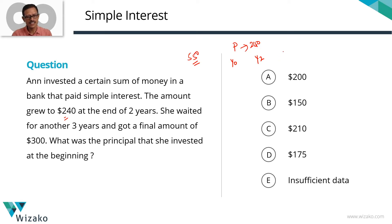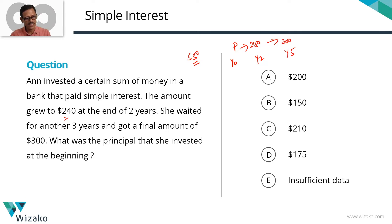At the end of another 3 years — so at the end of year 5 — the amount she picked up was $300. She waited another 3 years and received a final amount of $300.